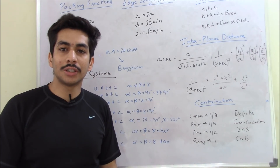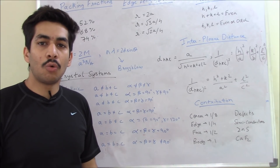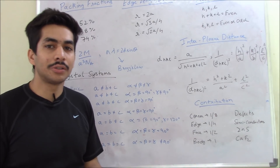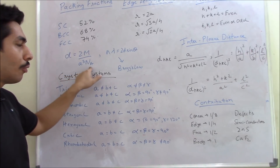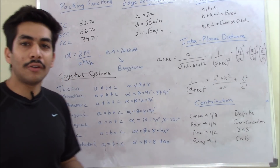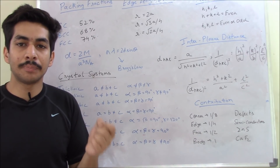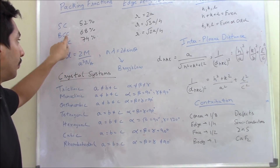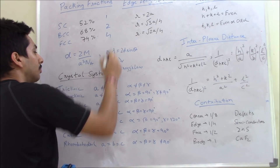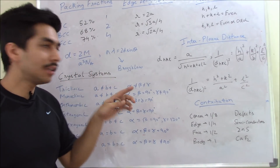Sometimes a question is directly asked: given the edge length of an FCC lattice, what is the radius? They can mix up two questions. Here I have given you the density formula — another formula for finding the density of a cube. Density equals Z times M, where Z is the number of atoms in a crystal. For simple cubic Z = 1, for body-centered Z = 2, and for face-centered Z = 4. Just remember 1, 2 and 4.